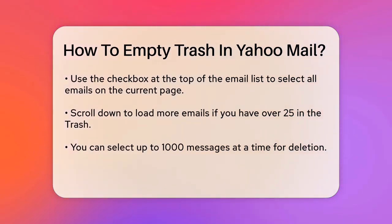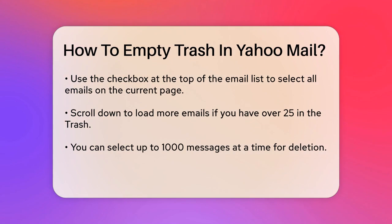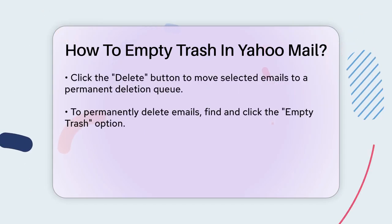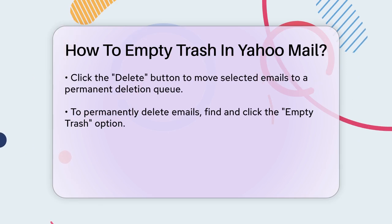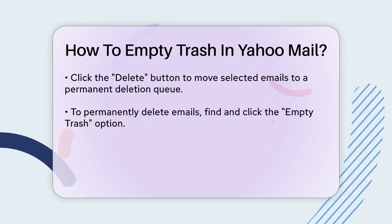This will display all the emails that you've previously deleted and are waiting to be permanently removed. At the top of the email list, you'll see a checkbox. Click this checkbox to select all the emails on the current page. Since Yahoo Mail loads emails in batches, if you have more than 25 emails in your trash, you'll need to scroll down and load more messages. You can select up to 1,000 messages at a time. Once you've selected all the emails you want to delete, click the Delete button.